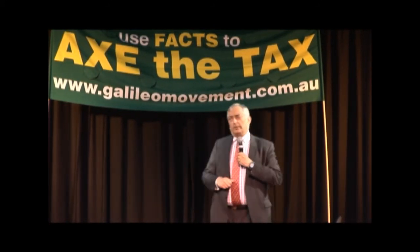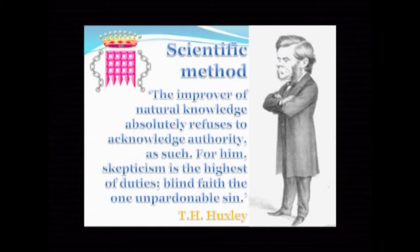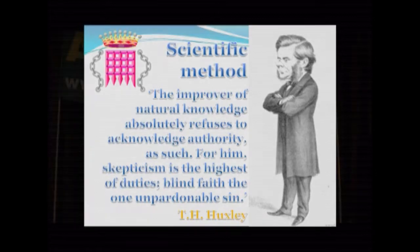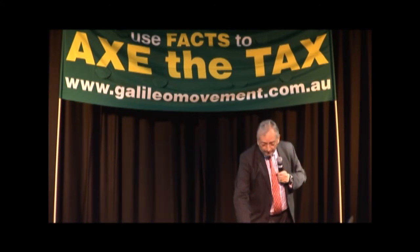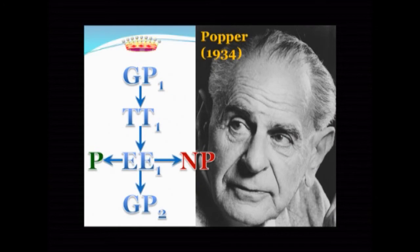It was put still more bluntly by T.E. Huxley in his famous debate over evolution with Bishop Soapy Sam Wilberforce at the Oxford Museum of Natural History in 1860. He said: 'The improver of natural knowledge absolutely refuses to acknowledge authority as such. For him, scepticism is the very highest of duties. Blind faith, the one unpardonable sin.' Karl Popper, who formalized the scientific method for our time in a celebrated paper of 1934, said that the scientific method is an iterative algorithm — a series of stages, each leading to the next, which goes round and round until a conclusion is reached.